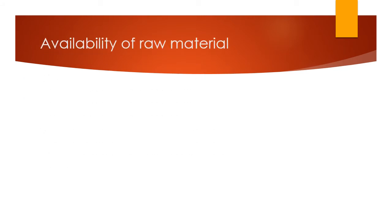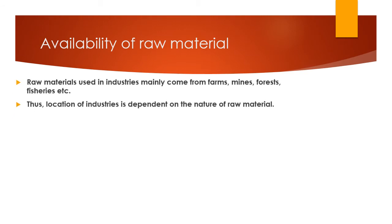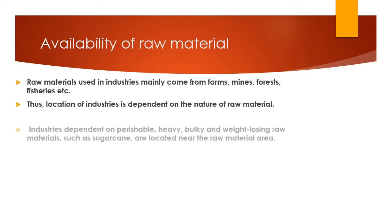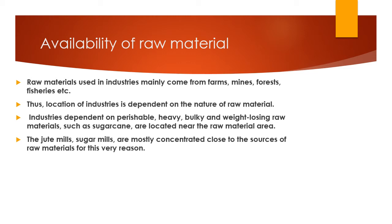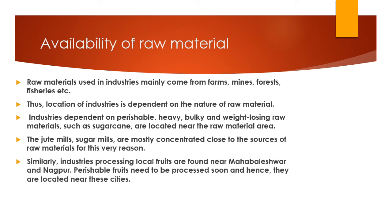Raw material is very essential and comes directly from agricultural sectors like farms, mines, forests, or fisheries. The location of an industry is dependent on the nature of its raw material. Industries that depend on perishable, heavy, bulky, or weight-losing raw materials — such as sugarcane — are located near the raw material area. Jute mills and sugarcane mills are mostly concentrated at the sources of raw material. Similarly, fruit-processing industries are found near Mahabaleshwar and Nagpur.